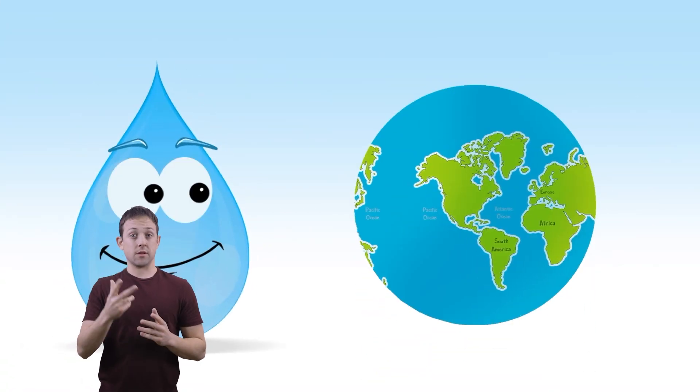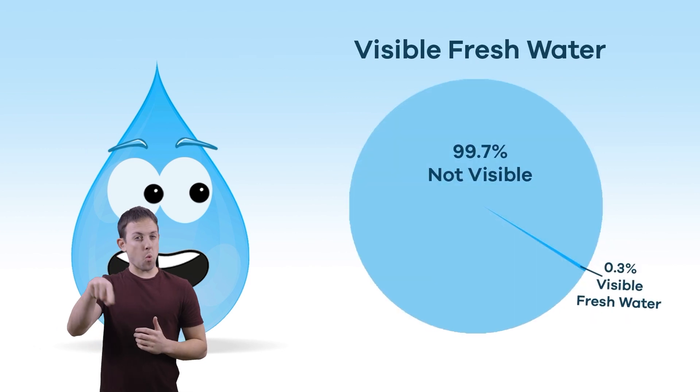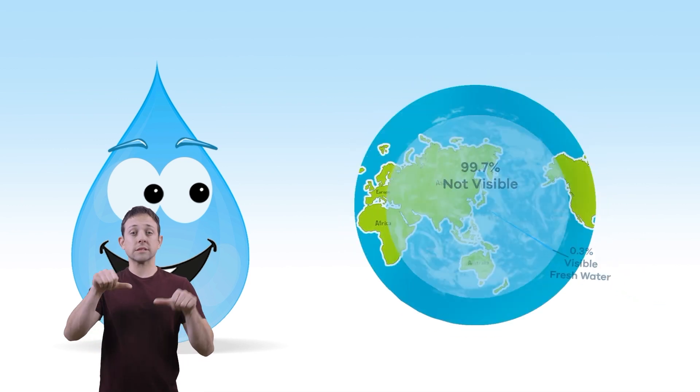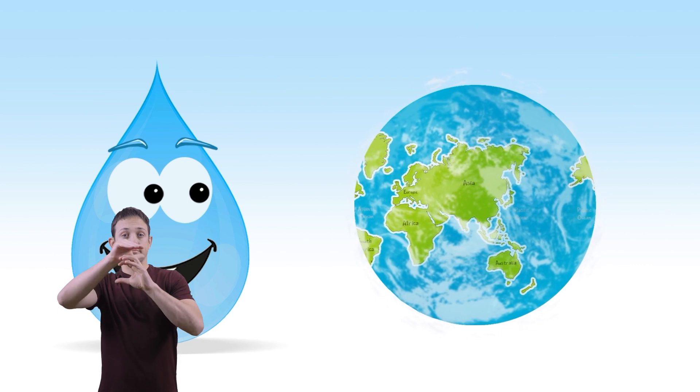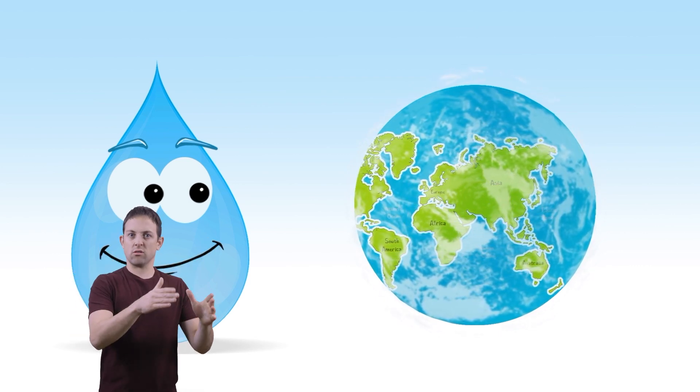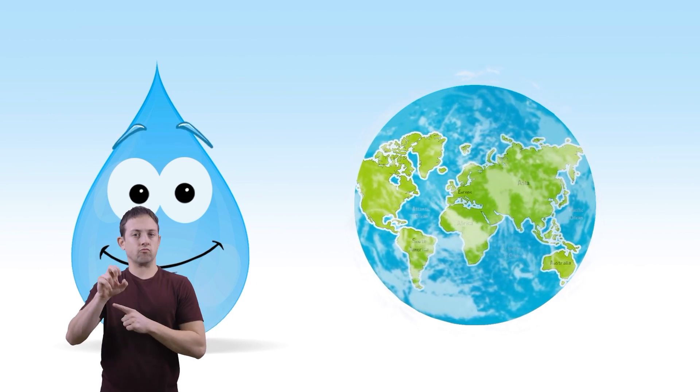Here is another fact. The freshwater on earth makes up about 3% of all the earth's water. And only about 0.3% of all freshwater is visible. Research by scientists reports that the atmosphere surrounding the earth contains more freshwater than all the rivers combined. So, it is important to conserve freshwater whenever we can.